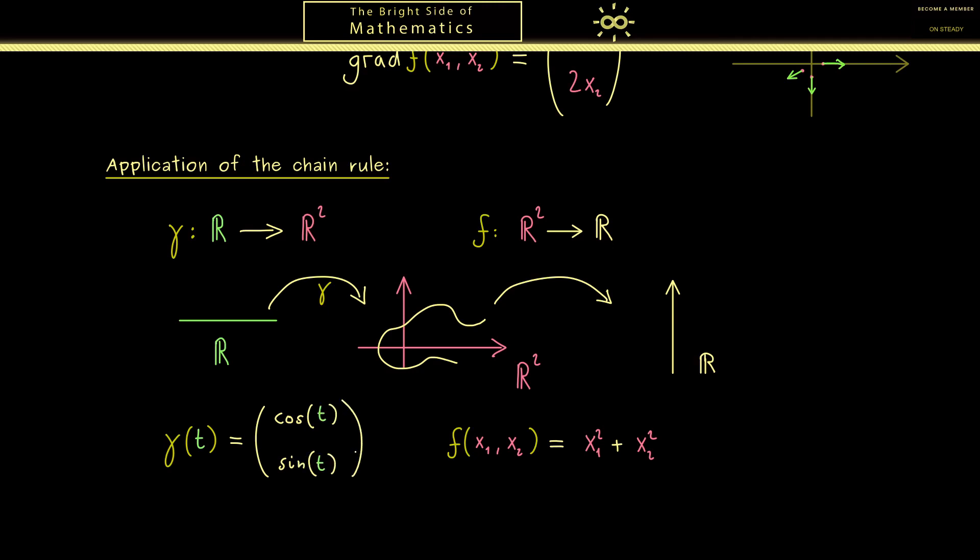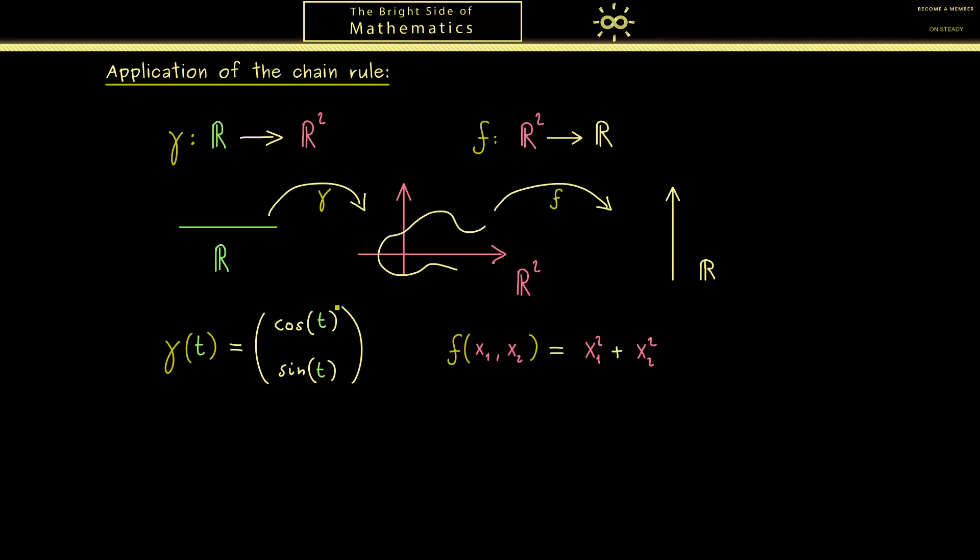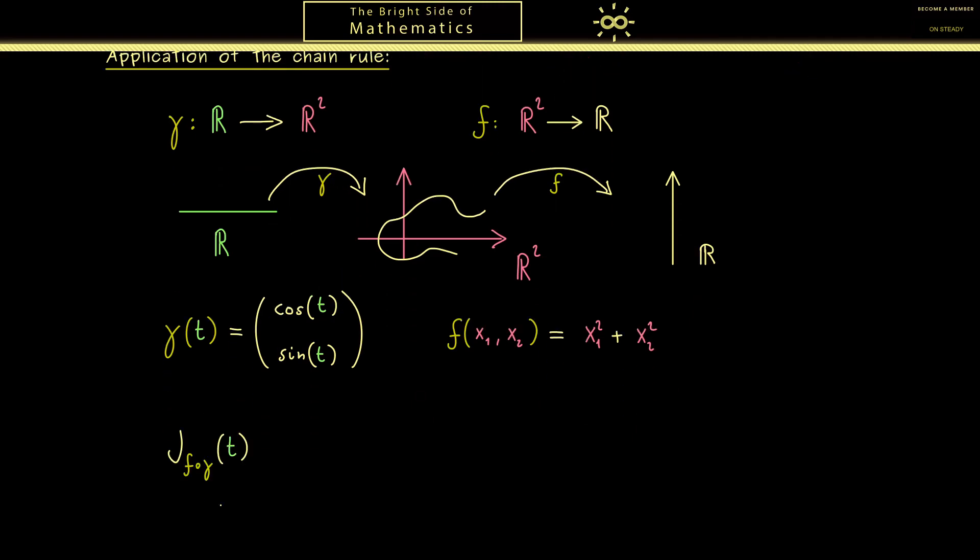Okay, now we have two possibilities to calculate the derivative of the composition of the two maps. First we could put them together and then we could calculate the derivative as a normal one dimensional one. However of course that is not what we want to do here. Here we want to apply the multivariable chain rule from the last video. And it tells us that the Jacobian matrix of f after γ is given by the multiplication of two Jacobian matrices. Namely we have the Jacobian matrix of f at the position γ(t) times the Jacobian matrix of γ at the position t.